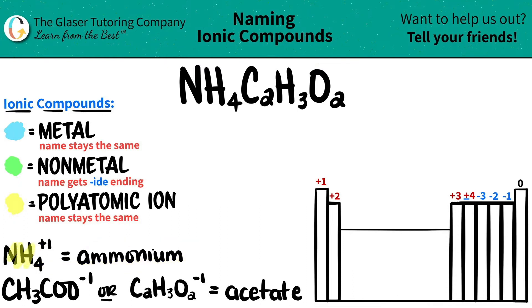Ammonium is always NH4 with the plus one charge, and that one is right here. Here's NH4, so I have a polyatomic there.